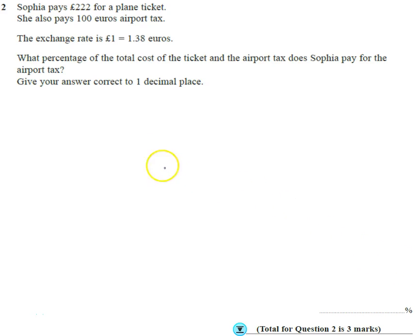Right, question number two. We've got Sophia paying £222 for a plane ticket. She also pays 100 euros airport tax. The key is let's all work in the same currency, pounds or euros. What I'm going to do, you can do it the other way and it will work out the same, but I'm going to convert the £222 into euros.